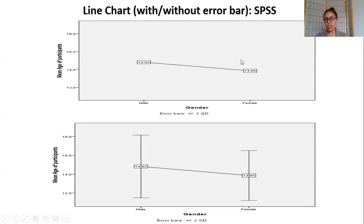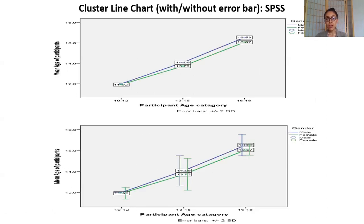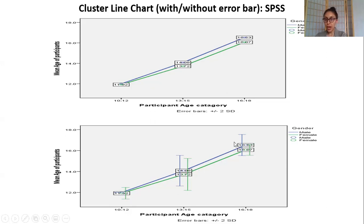Here is an example of a line chart with and without error bars. Without error bars, you can see males and females with mean age values. With error bars, you have the standard deviation bar shown. Males have a mean age of 14 and females around 13.8, with the standard deviation error bars visible. Cluster line charts divide data into categories — here the three age groups 10–12, 13–15, and 16–18 — for males and females separately. The blue line is for males and the green line for females, with mean ages reported in white boxes and standard deviation error bars.